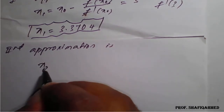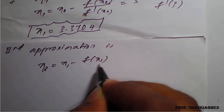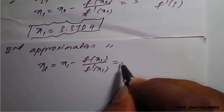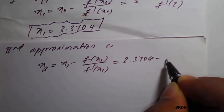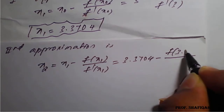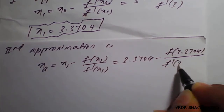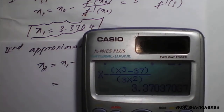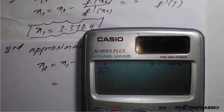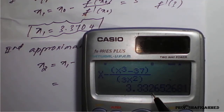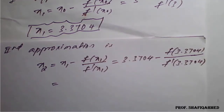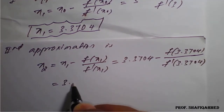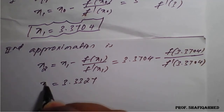We will go for the second approximation. x₂ equals x₁ minus f(x₁) divided by f'(x₁), which is 3.3704 minus f(3.3704) divided by f'(3.3704). Using the calculator with x equals 3.3704, the answer comes as 3.33265, which we round up to 4 decimal places as 3.3327. So the second approximation is x₂ equals 3.3327.